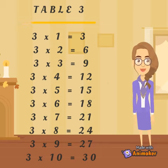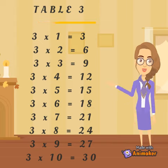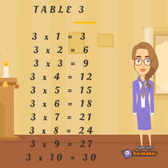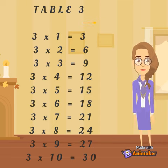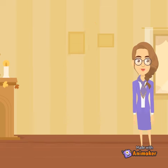3 6s are 18. 3 7s are 21. 3 8s are 24. 3 9s are 27. 3 10s are 30.